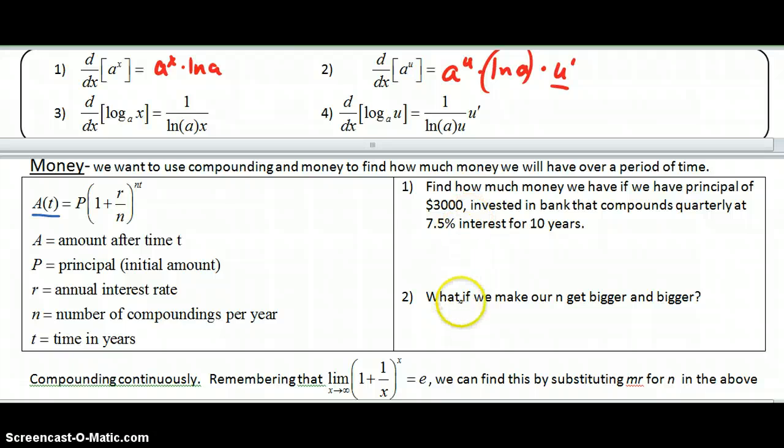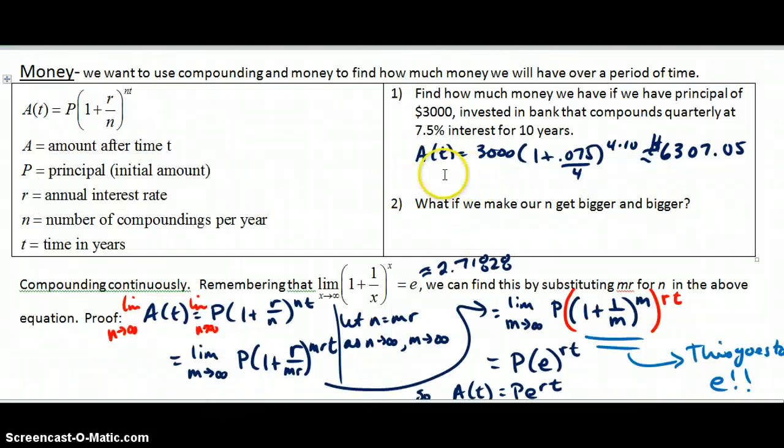So go ahead and find these two answers, or at least find this answer, and then I'll show this to you, and then I'll show you the proof of how we get e. Okay, so for this one, what happens is that we get 6,307, so you can plug that in and do that. Then it says, what happens if our n gets bigger and bigger? Well, we're going to get a little bit more money because we're going to increase our number of compoundings. If we do that, we're just going to get some more money. Now if we do this so that n becomes every minute, every second, every half second, and so on, what we do is that we approach a limit. And that's what happens when we get e.